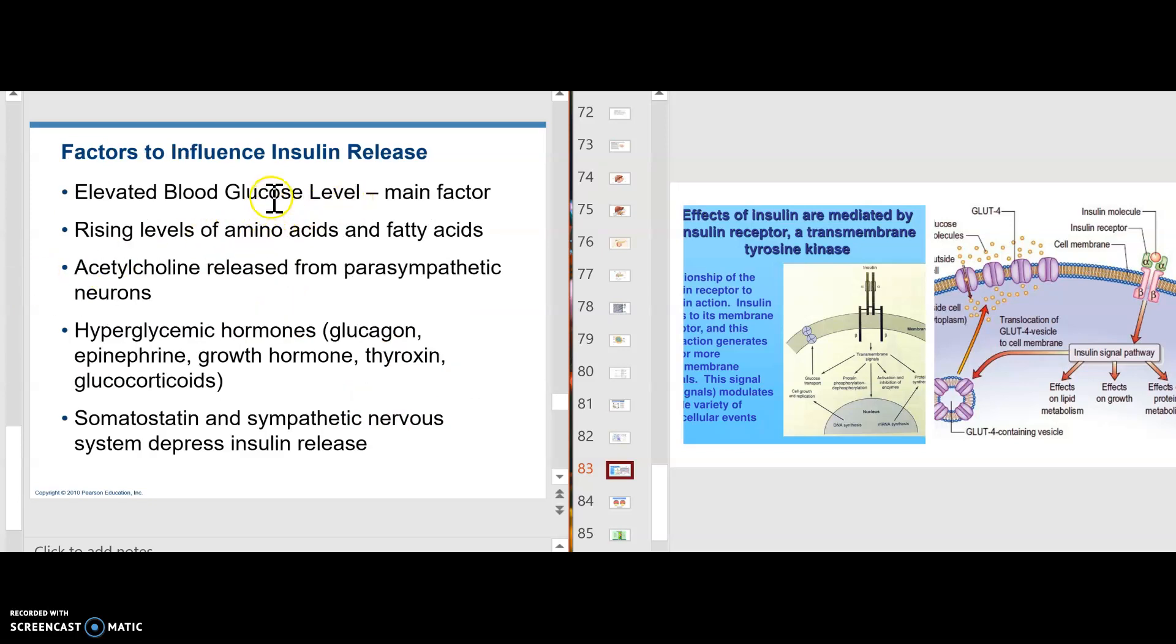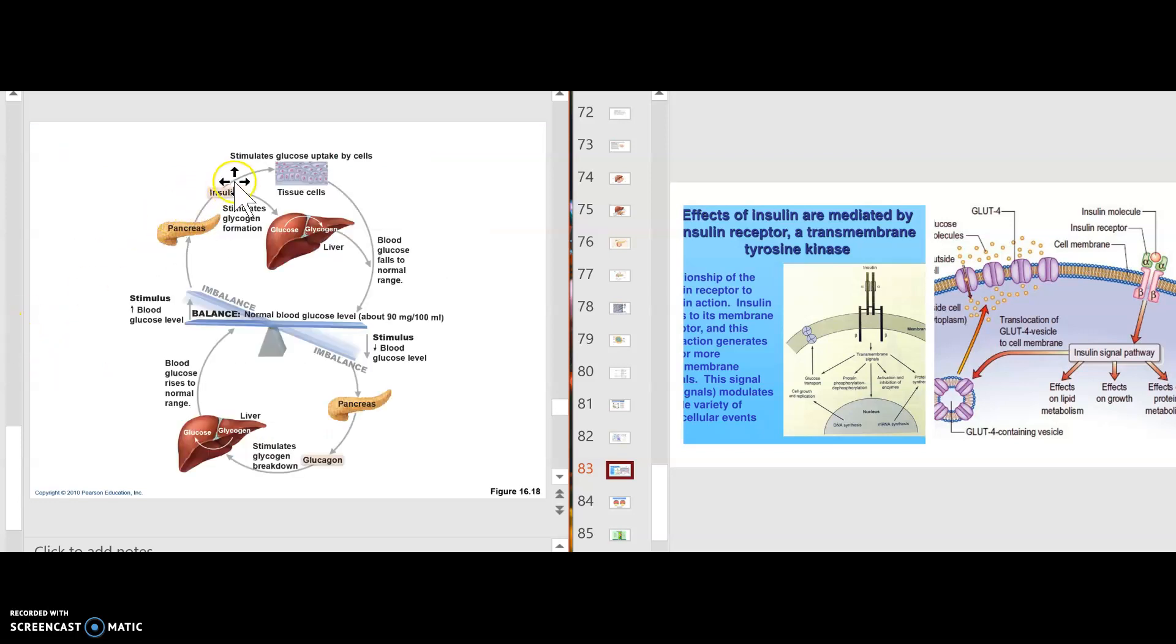Factors that influence insulin release. Elevated blood glucose, we know that. Rising levels of amino acids because what did glucose do? It also decreased the amount of amino acids in the blood and fatty acids. Acetylcholine from the parasympathetic would do it. Hyperglycemic hormones, they would work indirectly to do it. All of these hormones raise blood sugar. But they would be doing it for a good purpose. But let's say they were being secreted in excess and the blood sugar was getting too high, then we need insulin to come and modulate the activity. And somatostatin, growth hormone activity, and sympathetic depressed insulin release. So here again is this cycle which you can look at to maintain the glucose in the blood in the proper level.